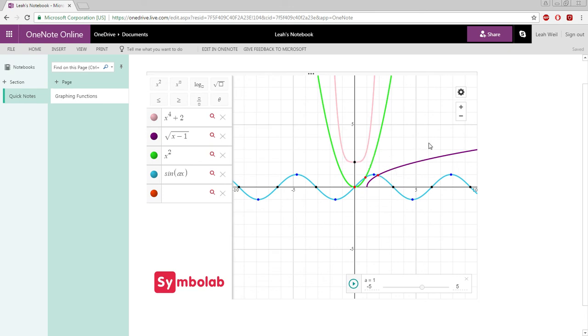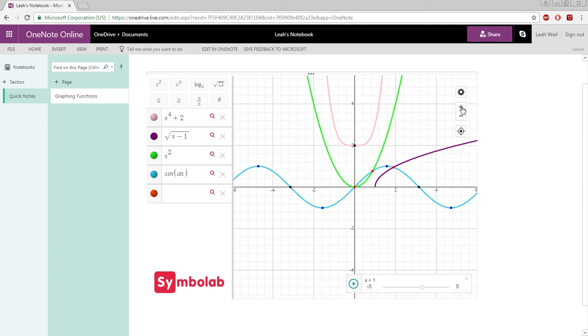If you want to zoom in and out of the graph, click the plus sign to zoom in, and right below that click the minus sign to zoom out.